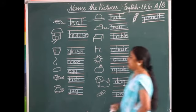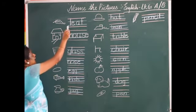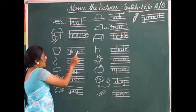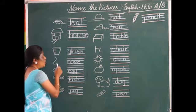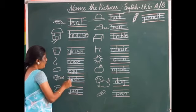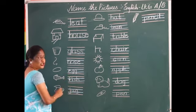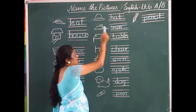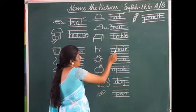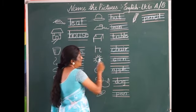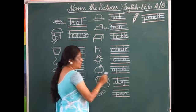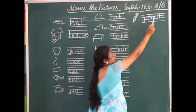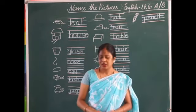Now we'll have a brush-up of all the pictures. Okay, here we go. L-E-A-F, leaf. H-O-U-S-E, house. G-L-A-S-S, glass. N-O-S-E, nose. E-G-G, egg. F-I-S-H, fish. J-U-G, jug. H-A-T, hat. I-R-O-N, iron. T-A-B-L-E, table. C-H-A-I-R, chair. S-U-N, sun. A-P-P-L-E, apple. P-E-N-C-I-L, pencil. Got it? Thank you.